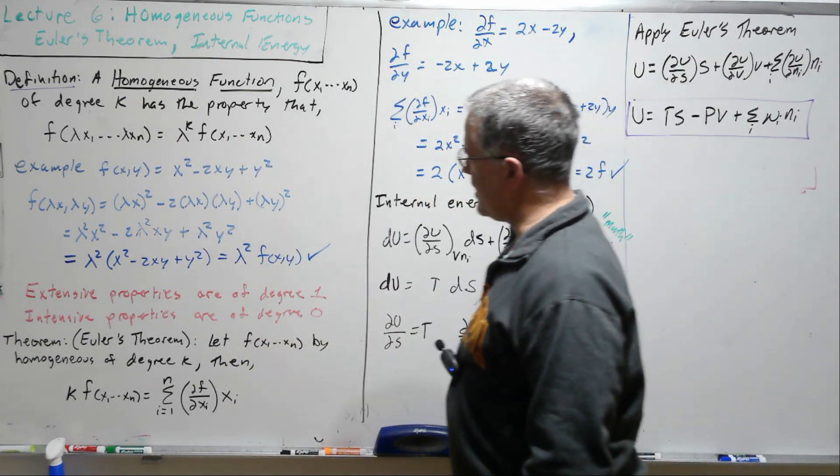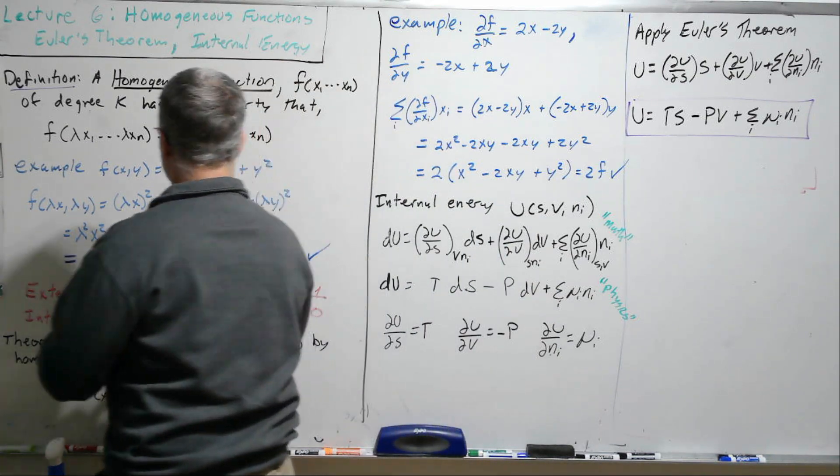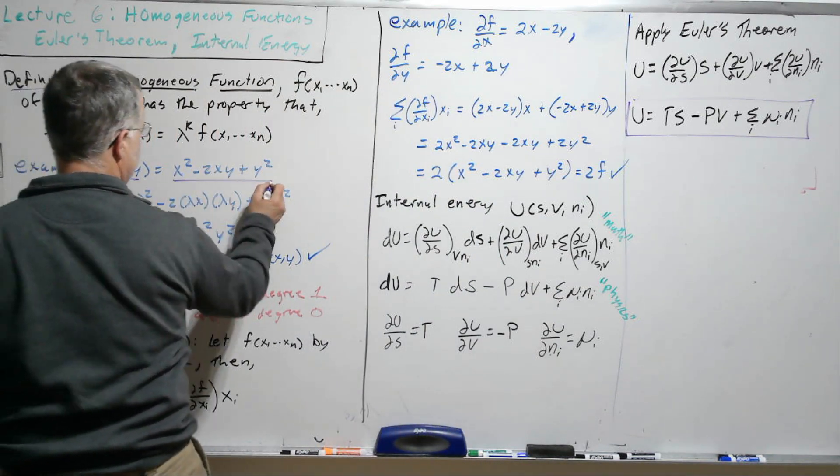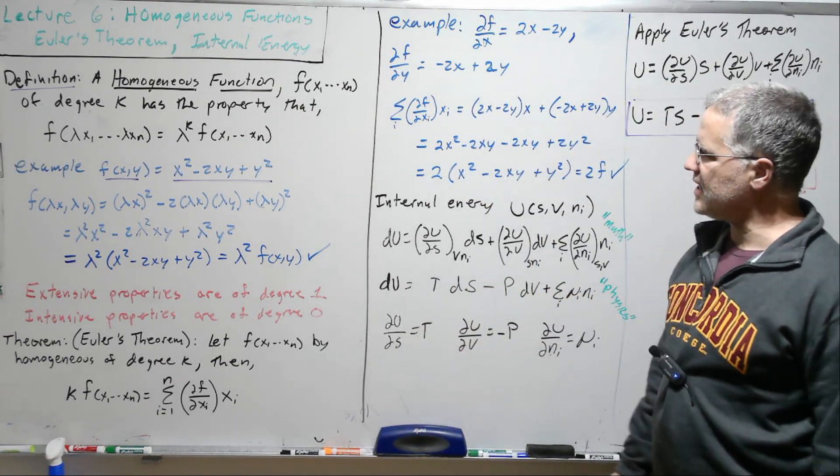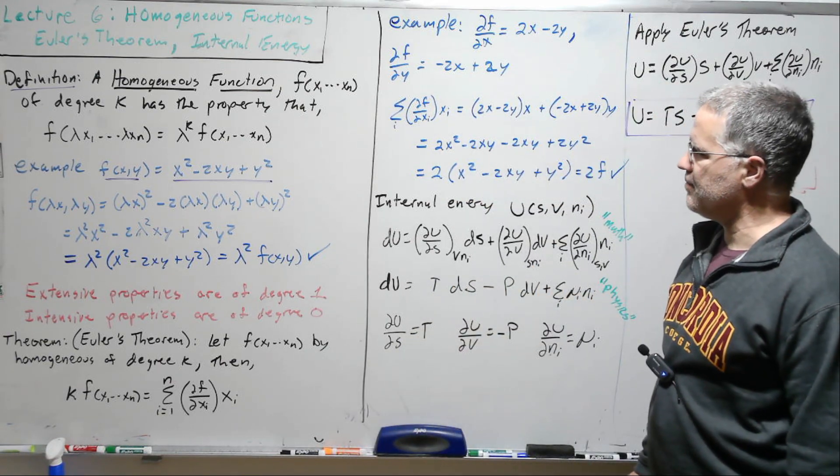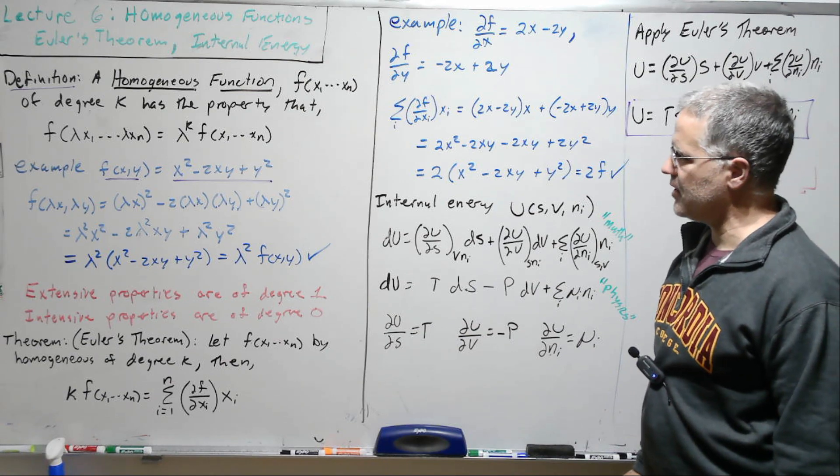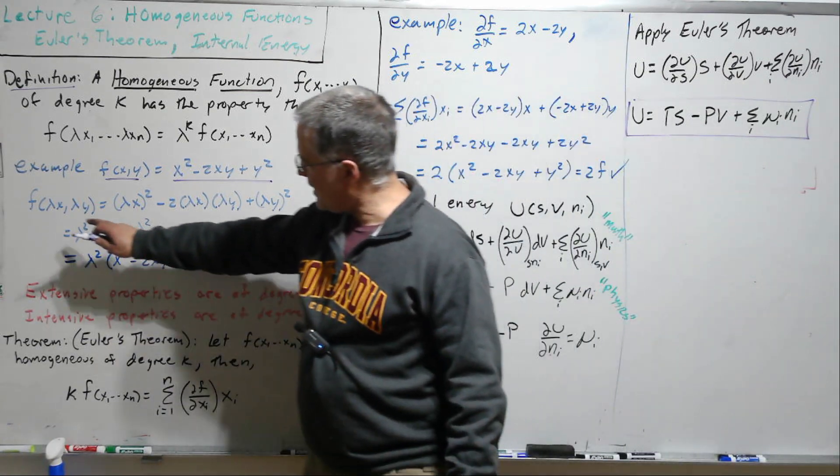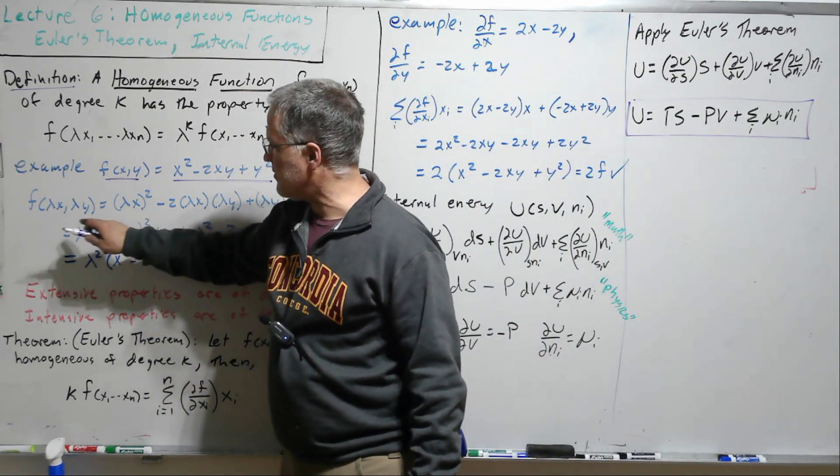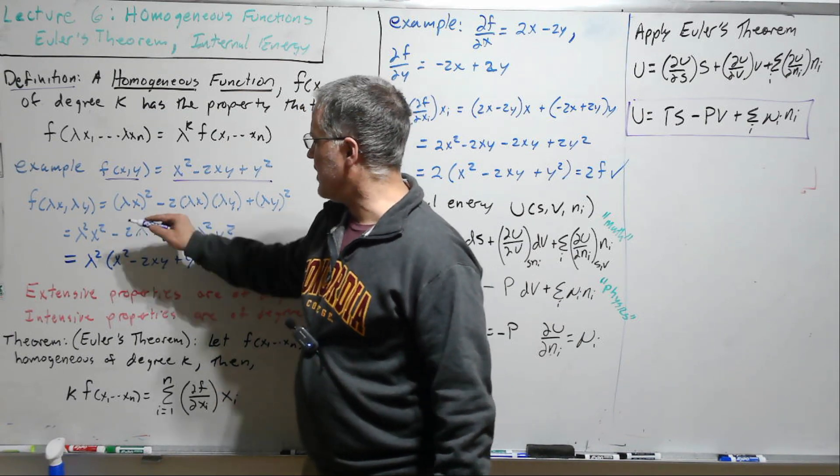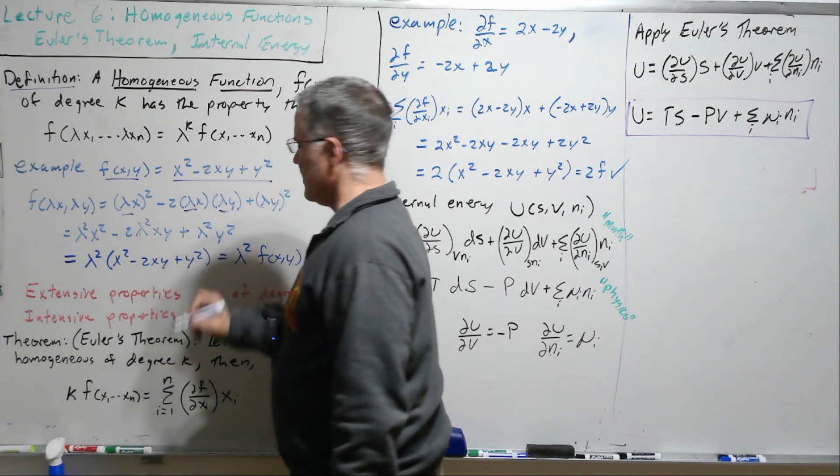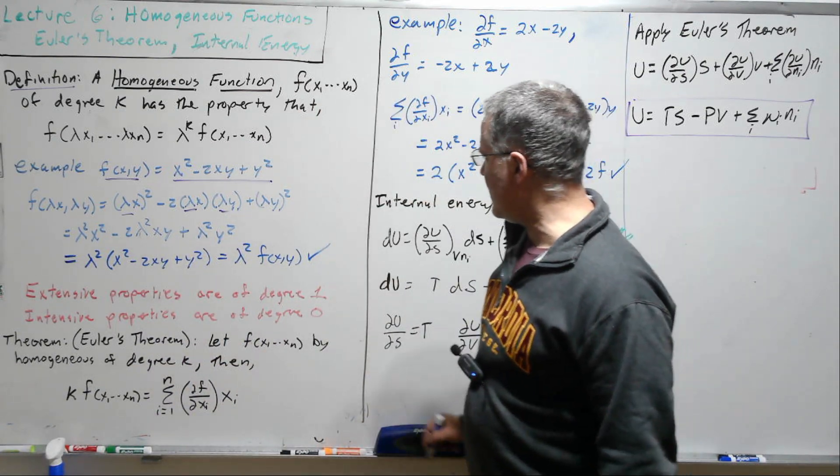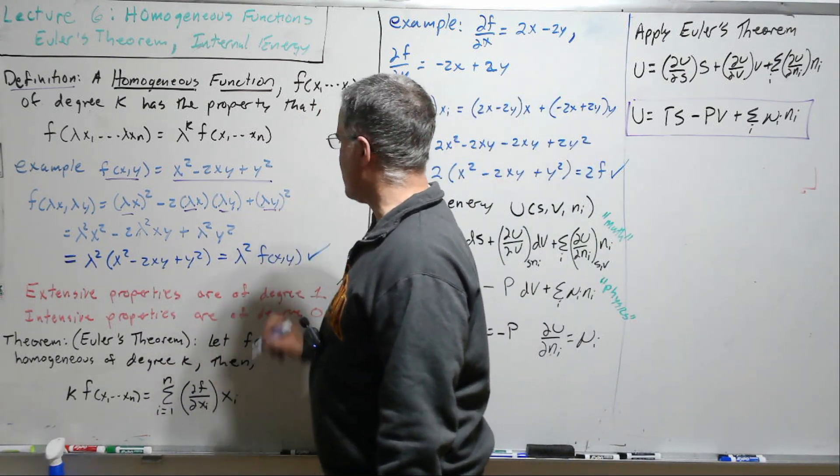So for example, let's use this function here. This is one we used on the first day in the first lecture. Let's use that again here. So our function is x squared minus 2xy plus y squared. So now we're going to take the function of lambda x lambda y. So it'll be lambda x squared and then each one of these will get a lambda x and a lambda y there and then a lambda y squared.